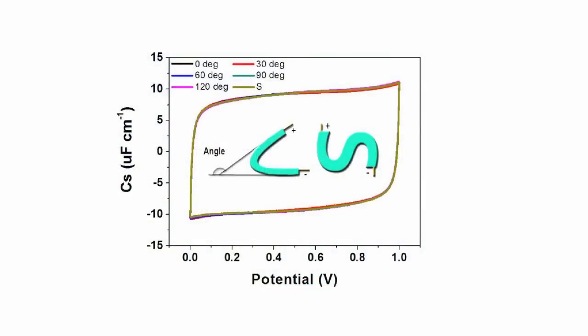The electrochemical capacitors was bent from 0 degree to 120 degree or into S-shaped structure.